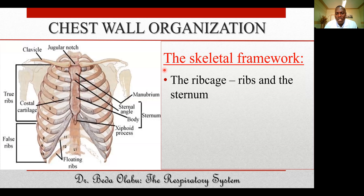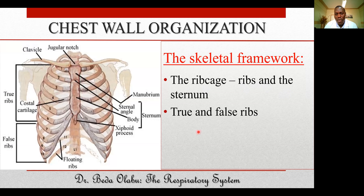The skeletal framework of the chest wall consists of the rib cage as well as the vertebral column. When you talk of the rib cage, you are referring to the ribs and the sternum. There are a total of 12 pairs of ribs, which can be classified into two groups: the true ribs and the false ribs.